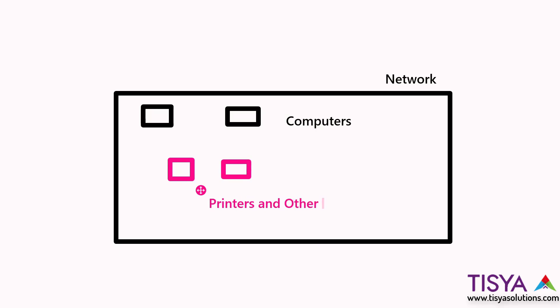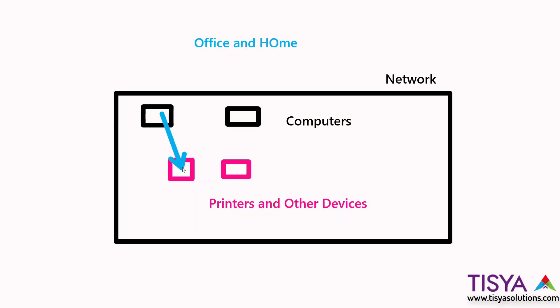In general, we have printers and other devices. You use networks both in your office as well as at home. The purpose of a network in either case is the same: the ability for your computers to talk to each other as well as to other devices on that network.